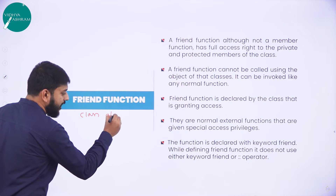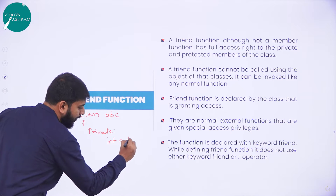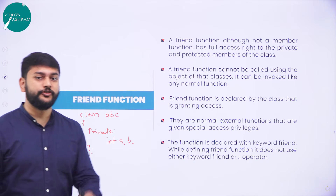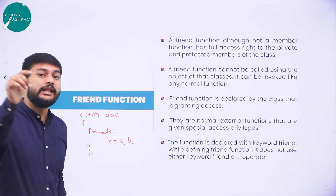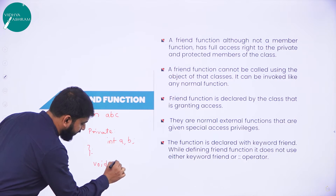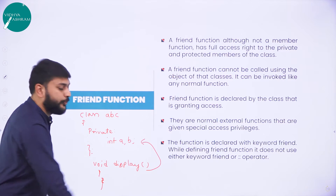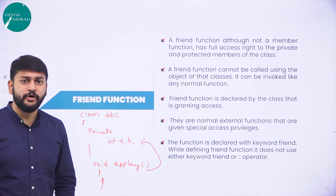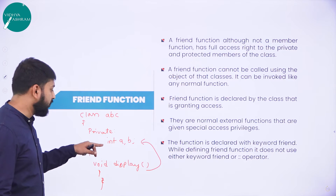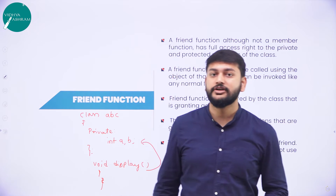Let me take a small example. Imagine I have a class ABC. Inside this class I am using private access specifier with int a, b. Only the class members can access this. Now imagine I have one more function defined outside the class which wants to access this private data member. This outside function can access the private data member only when I declare it as a friend function of this class. That is the concept of friend function.